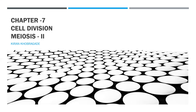Hello everyone. Welcome back to the chapter on cell division. In the previous lecture we had started with meiosis, which is a type of cell division, and we had learned that meiosis is divided into meiosis 1 and meiosis 2. In the last lecture we studied meiosis 1 in detail, and in today's lecture we are going to study meiosis 2 in detail. So let us begin.